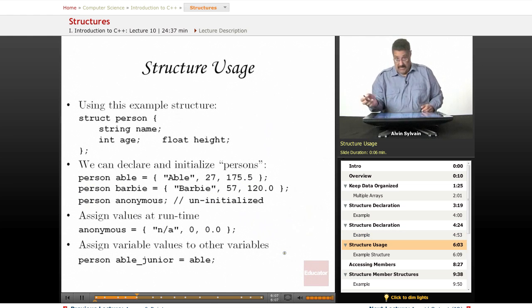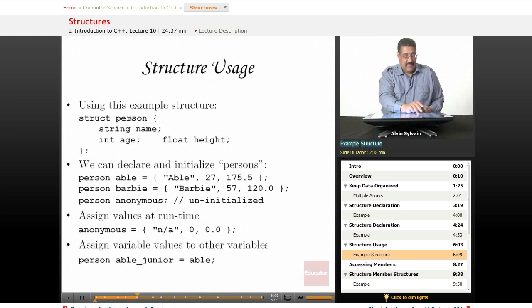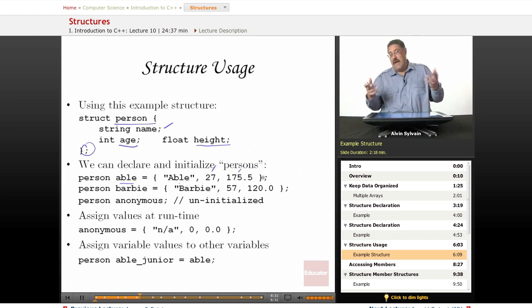Now we're going to use some of these structures. We have this example for a person who has a name, an age, and a height. So we'll have Abel. Don't forget that semicolon. We have Abel who is declared, his age is 27, and he's 175.5 centimeters.